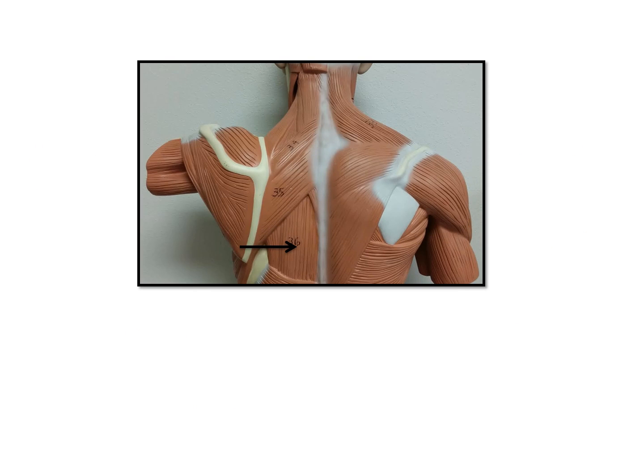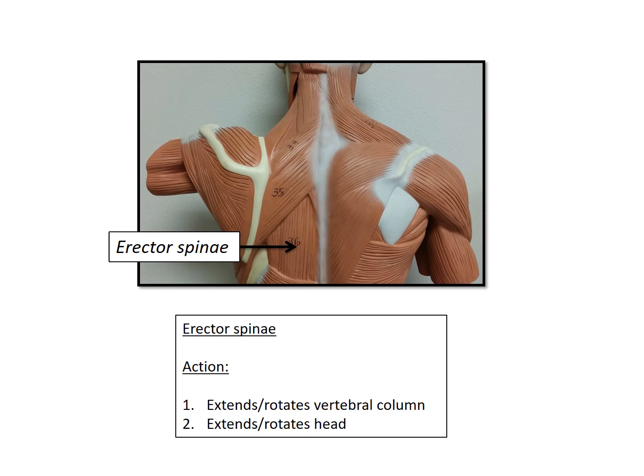Deep to rhomboideus major and minor, we have a group of muscles collectively referred to as the erector spinae. The action of these erector spinae muscles is generally to extend and rotate the vertebral column, and these muscles also extend and rotate the head.